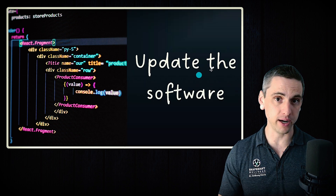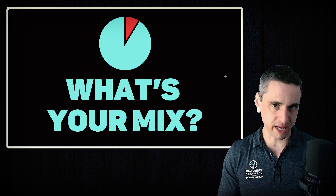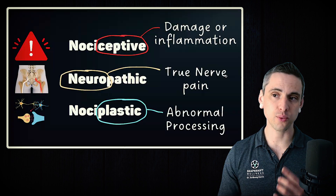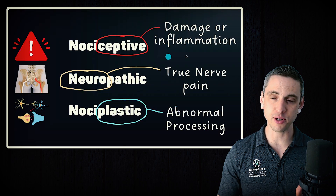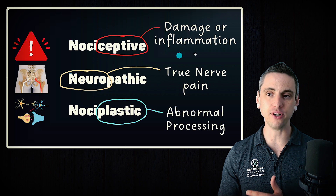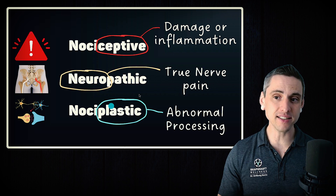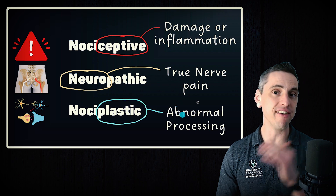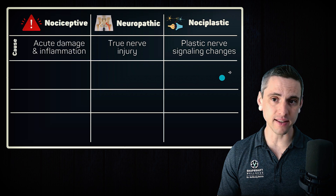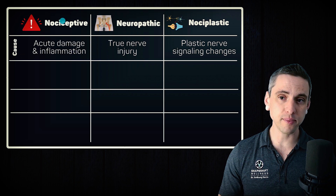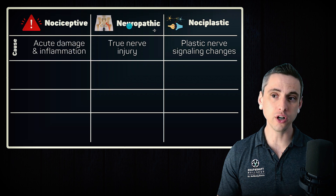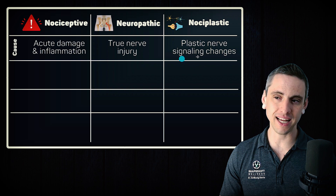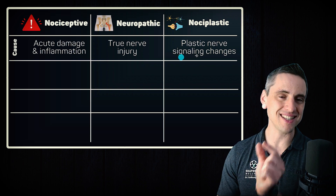Let me know in the comments: after watching this and understanding the three types of pain, what do you think is going on for you? Let's review. We have nociceptive pain, which is damage or inflammation. Neuropathic pain, meaning nerve pain, which is rare. And nociplastic pain, which is always present in chronic pain and is due to neuroplastic changes everywhere in the nervous system. Comparing these: the cause of nociceptive is acute damage and inflammation; for neuropathic, it's a true nerve injury; and for nociplastic, it's neuroplastic changes in the signaling between neurons and synapses.